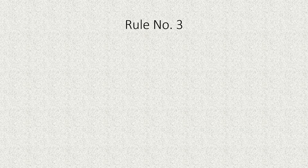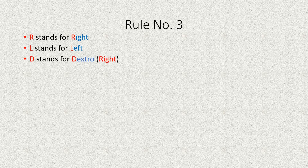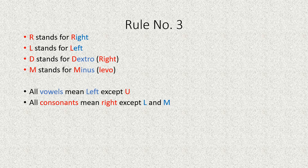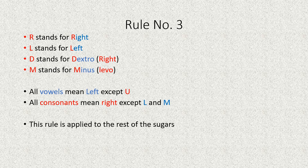For rule number three, memorize these: R stands for right, L stands for left, D stands for dextro which is right, and M stands for minus — used for levo sugars that rotate plane-polarized light to the left. All vowels mean left except U, and all consonants mean right except L and M. Also treat Y as a vowel, not a consonant. This rule is applied to the remaining sugars.